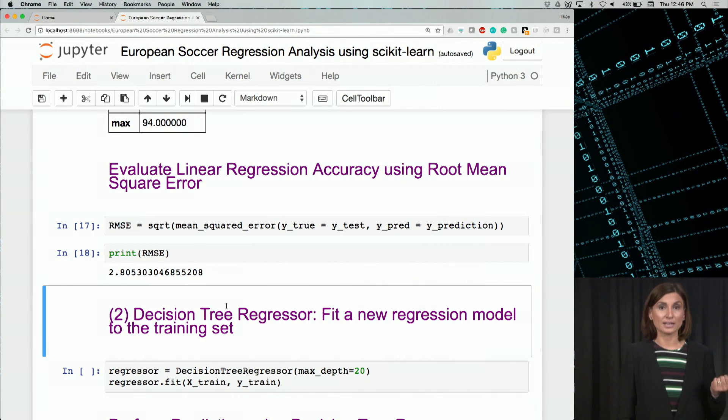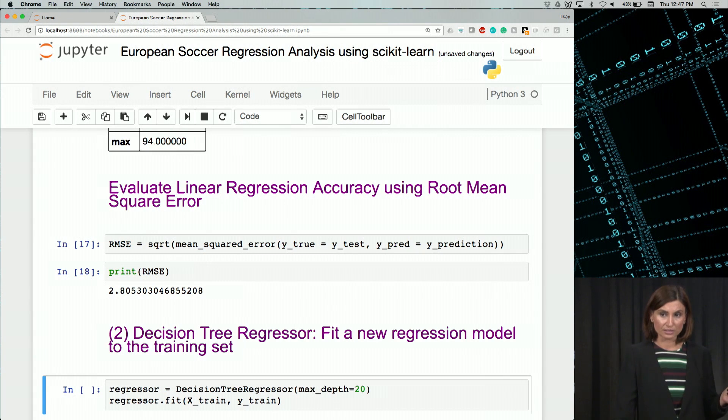So now let's use the decision tree regressor to capture player performance as a function of their attributes. The fit method performs the fine-tuning again. So we are doing the exact same thing. We have a regressor, but since this is a tree, it has a depth. The maximum depth is 20.